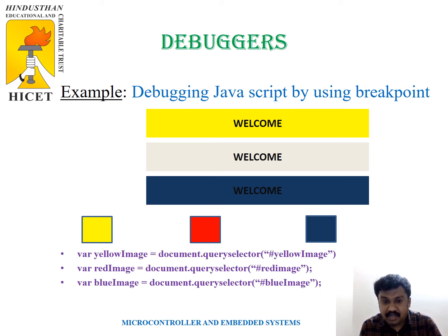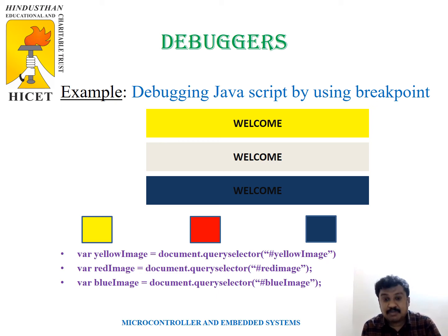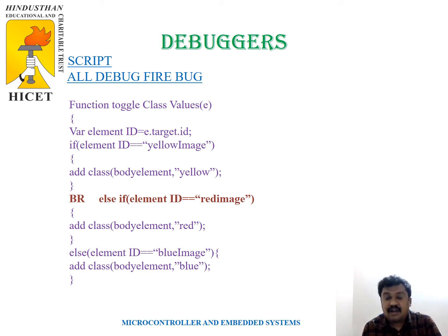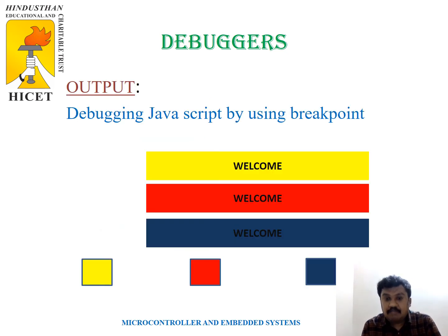Now, if you click on the red icon, the color won't change immediately. Why? Because there is an error. In the red image, the letter 'i' is in lowercase — it must be in caps. That is the error, so it must be corrected. In the script, the breakpoint is set where the error lies — in the red image. After it is corrected and rectified, you refresh the page. Now if you click on the red button, immediately the middle text box changes to red. This is the example of debuggers.